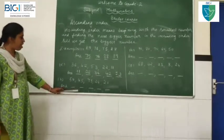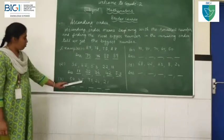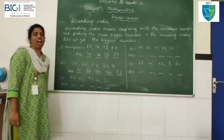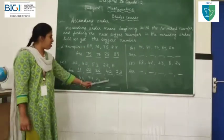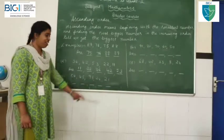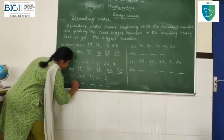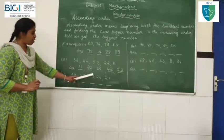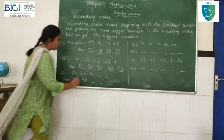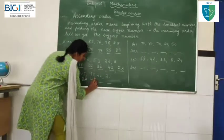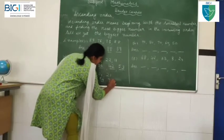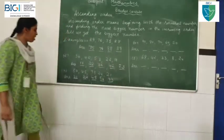Shall I go to the third example now? 54, 45, 93, 24, 21. Now, let's start with the smallest number. The smallest number is 21. Next number is 24. Next bigger number after 24 is 45. After 45, 54. After 54, 93.